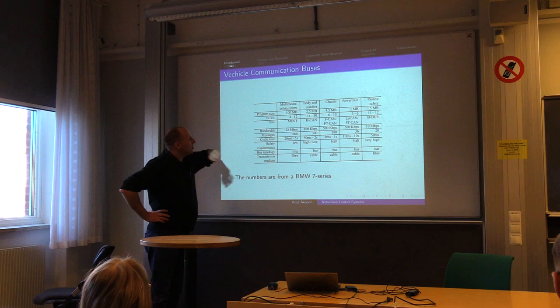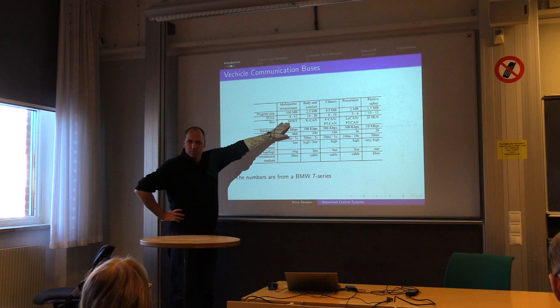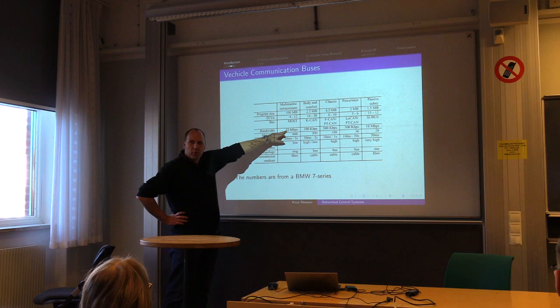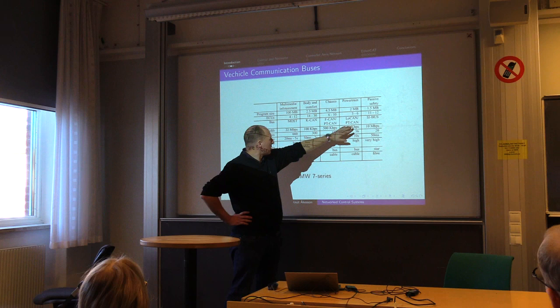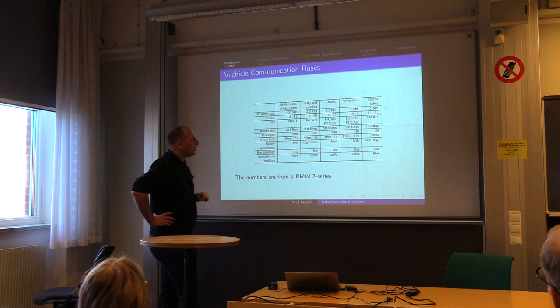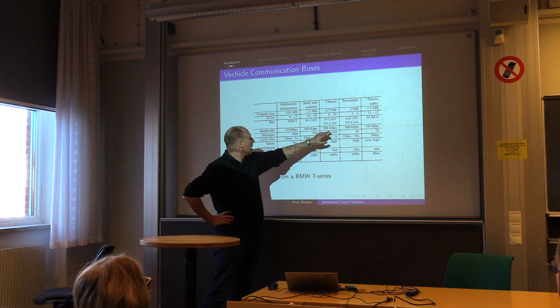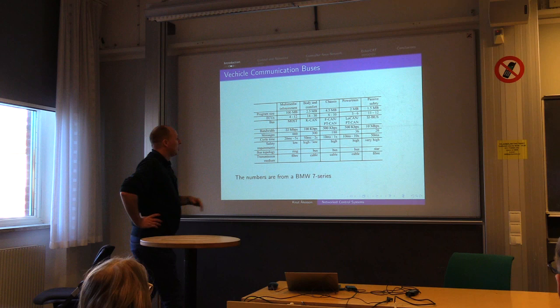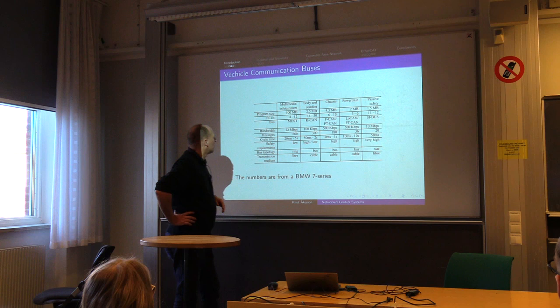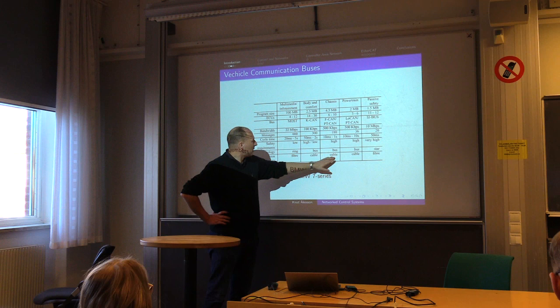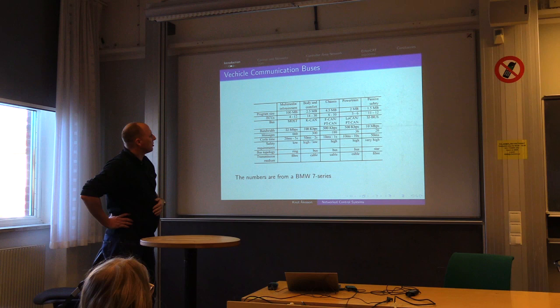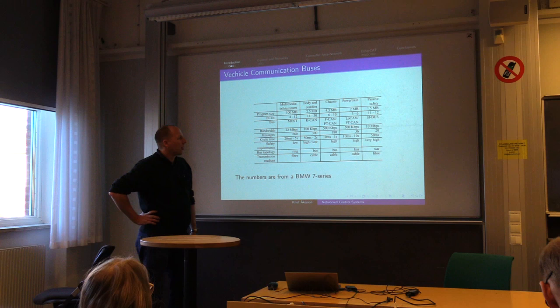If we look at the buses used: for multimedia there is a bus called MOST with 22 megabits per second bandwidth. For body, chassis, and powertrain, you have different versions of the CAN bus, which has much lower bandwidth but is very safety-critical. CAN uses ordinary copper cables to connect sensors and ECUs, while for multimedia you have optical fiber connections.